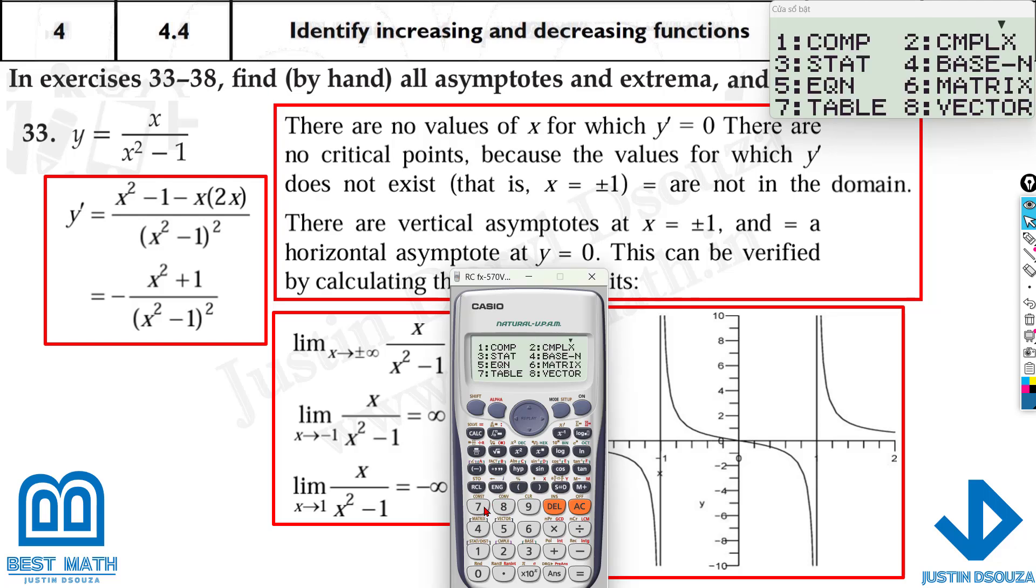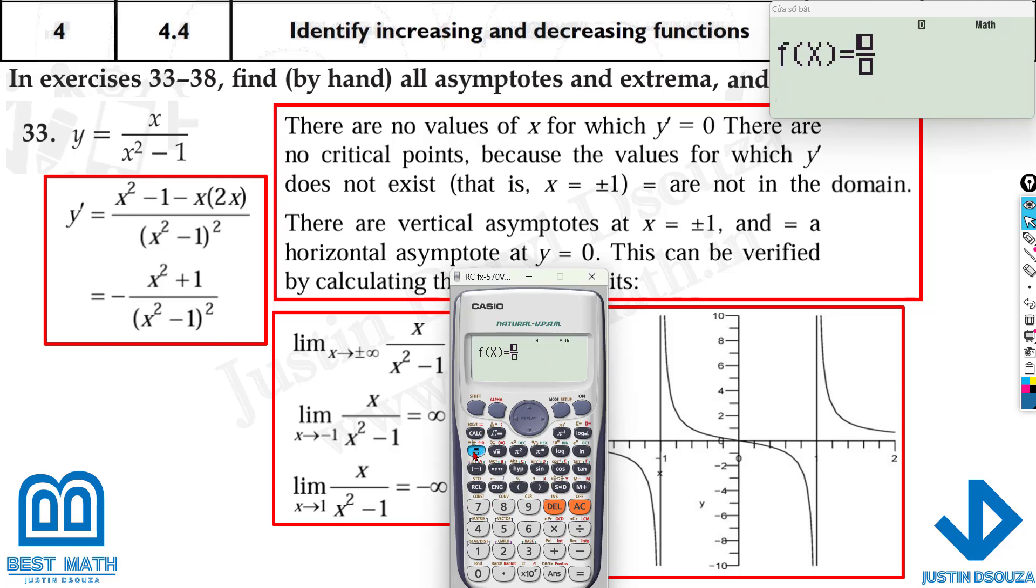We can stick to mode 7, the table, and type this equation out. It's x divided by x squared minus 1. Now, there is no intervals given, so it's better to start at say minus 5 and end it at 5, and the step will be 1.